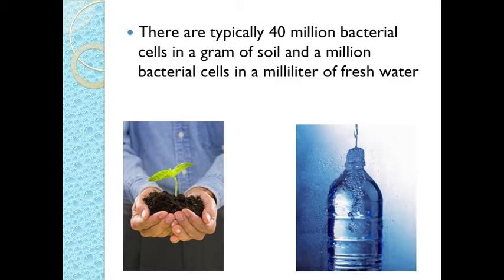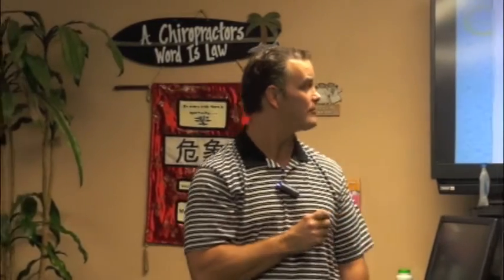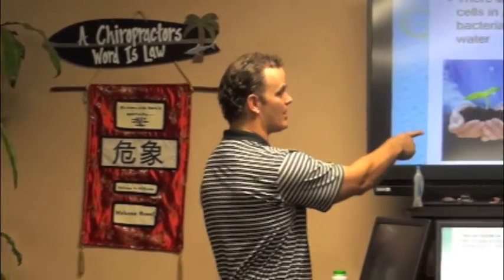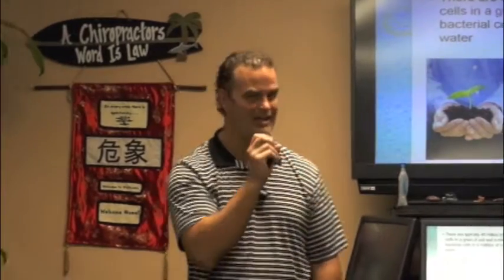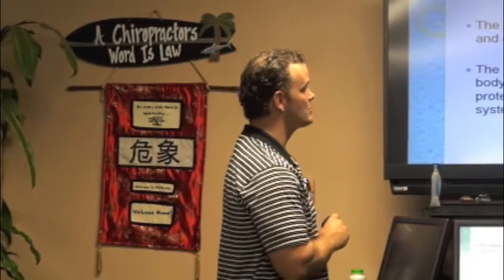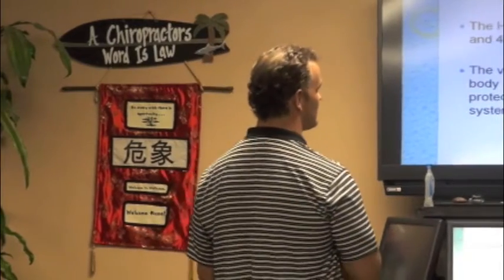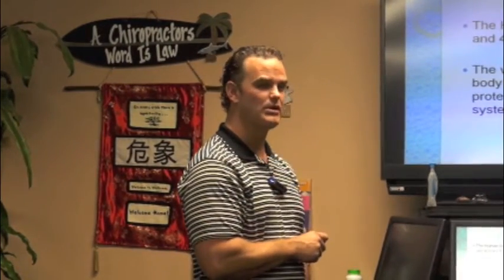Typically 40 million or more bacterial cells in a gram of soil and a million in a milliliter of fresh water — so these are tiny, tiny little single-cell organisms. We have 70 trillion cells and four times that many bacteria. Most of that is rendered harmless by our immune system, which is always boosted by being well-adjusted and having a good nervous system — a 300% boost in your immune system with the chiropractic adjustment.